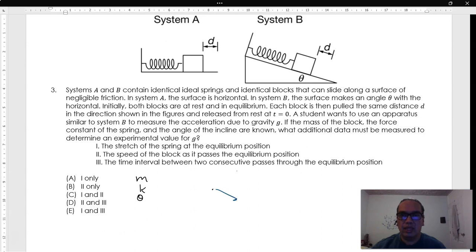On one hand, the component of the weight along the incline is mg sine of theta. On the other, the spring stretches some distance x, and it exerts a force up the slope equal to kx.